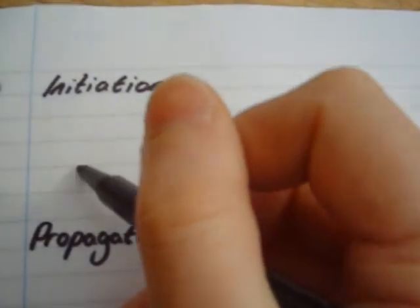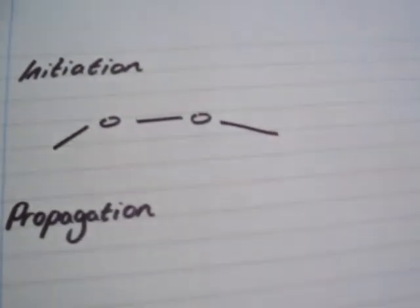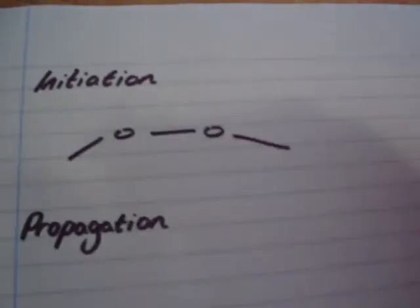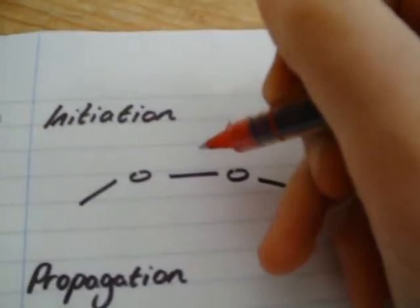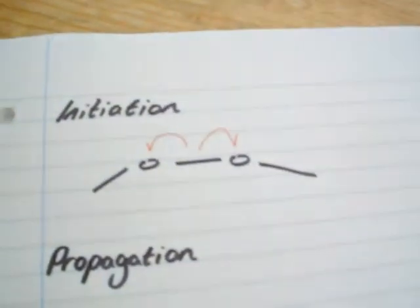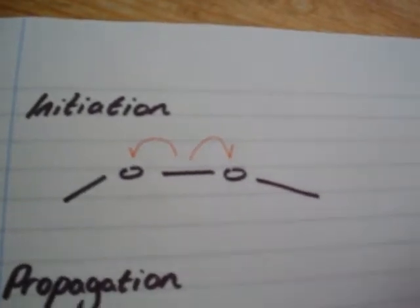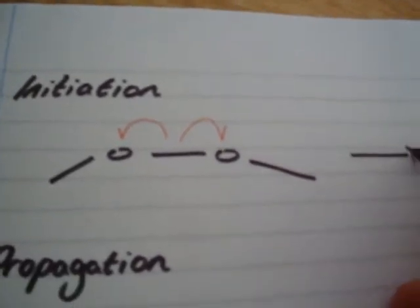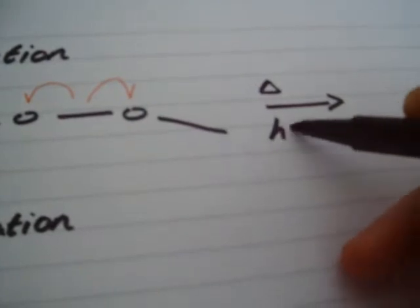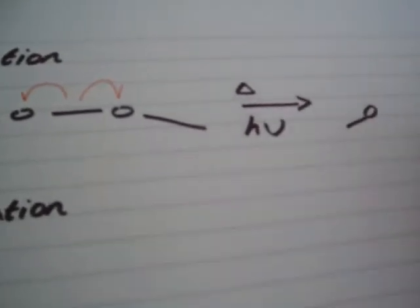Every polymerisation reaction happens in three steps. The first is initiation. We have our molecule with a peroxide bond, and it undergoes homolytic fission, which we show with these fishhook arrows that I'm drawing now. This means that the two electrons in the peroxide bond move separately, and with the addition of heat and light, that gives us two identical radicals.